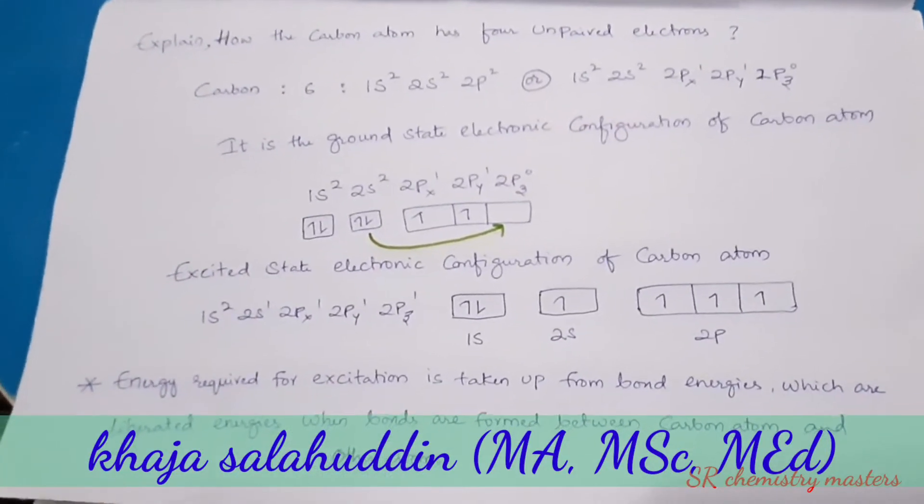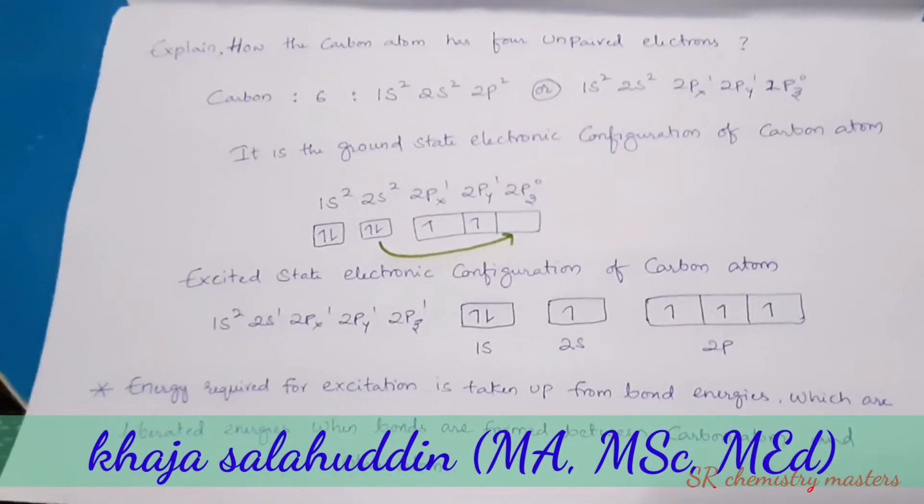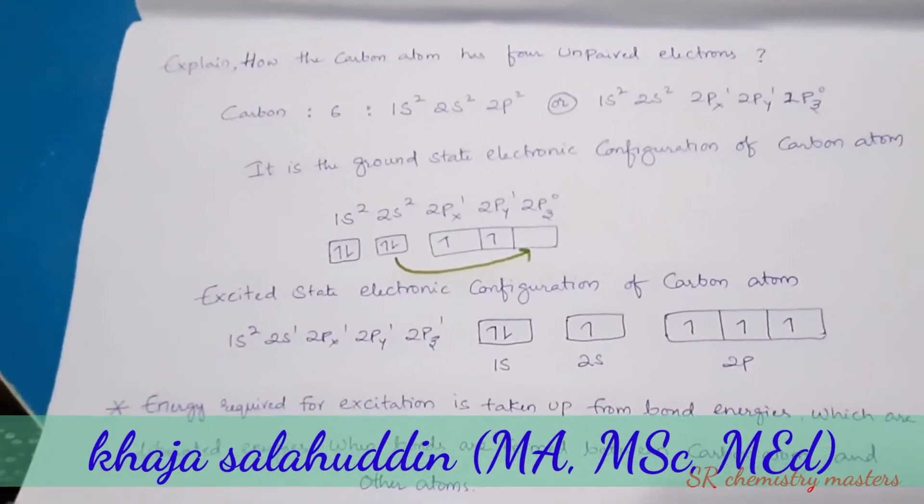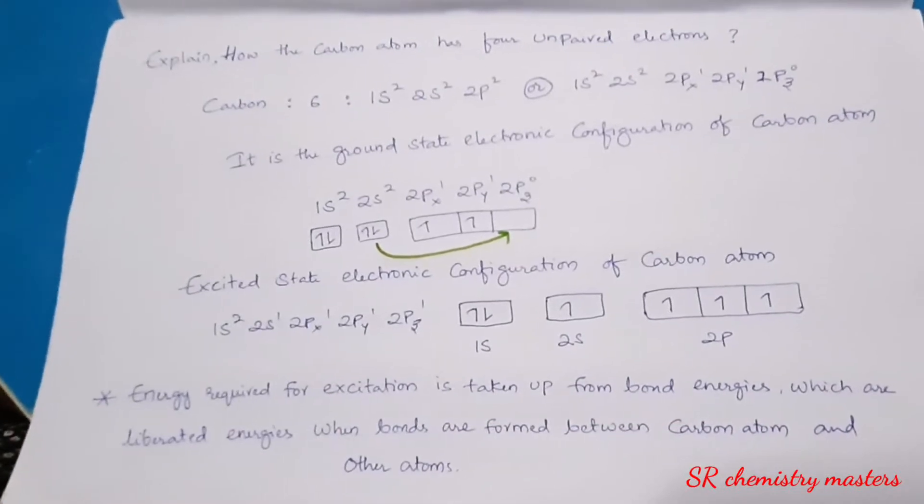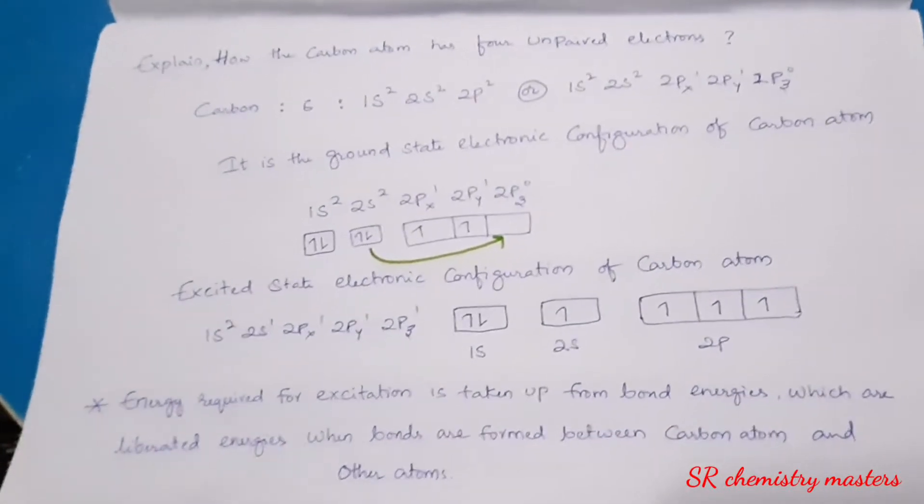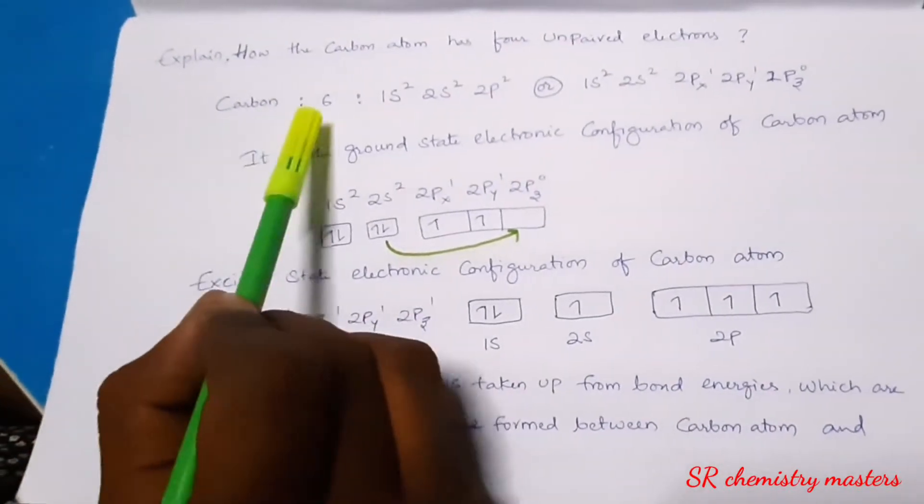In this video, we are going to discuss how the carbon atom forms 4 unpaired electrons, though it has 6 as the atomic number. Now let us see, as you all know, carbon atom has atomic number 6.